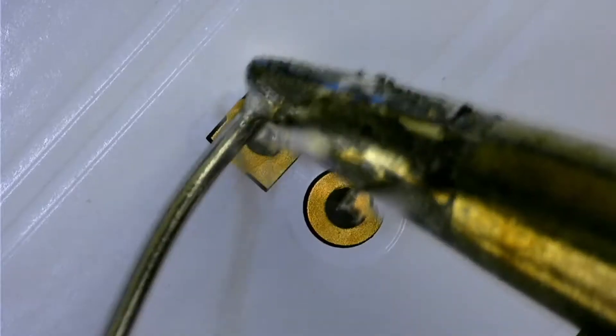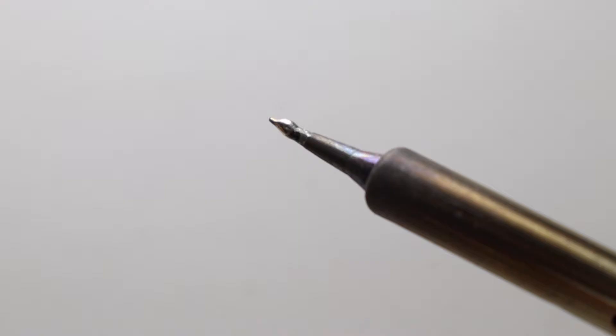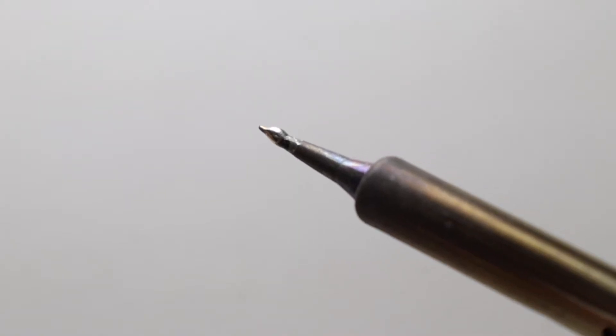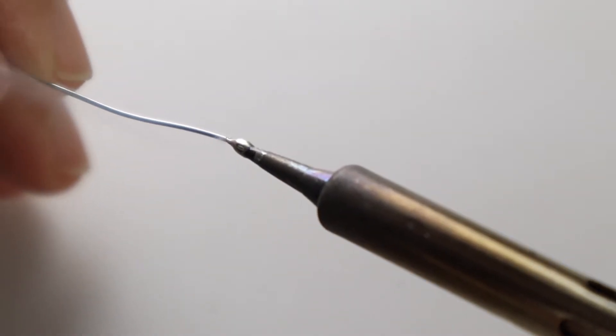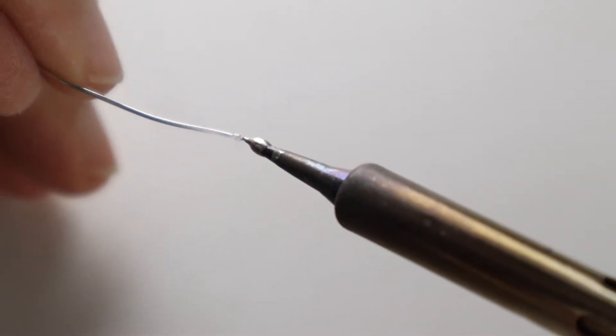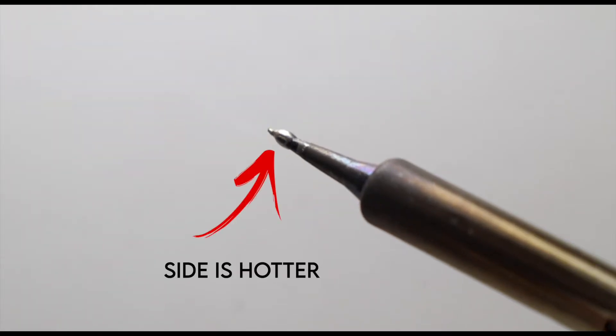The key to making a good solder joint is to remember that solder flows to the hottest part. On the tip of the iron, you might notice that the solder doesn't stick to the very tip. It pulls a little bit above the tip. That tells you that the tip of the iron is not the hottest part. Solder with the side of the iron instead, where there's more surface area and heat transfers better.